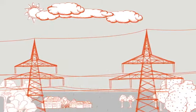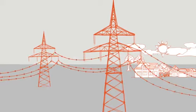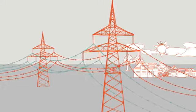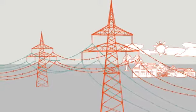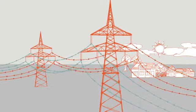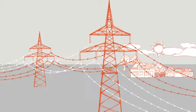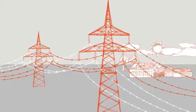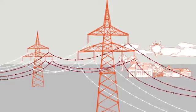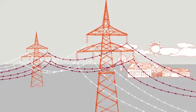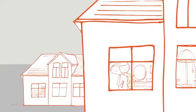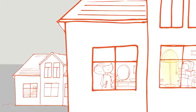The overhead lines of the 50 Hertz high-voltage grid are usually equipped with two electrical circuits. Electricity flows on the left and the right side. If one system or even the entire line fails, the rest of the power grid ensures the secure and uninterrupted electricity supply. This securing principle is called N-1.